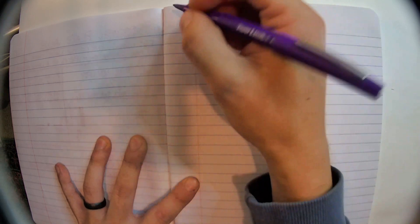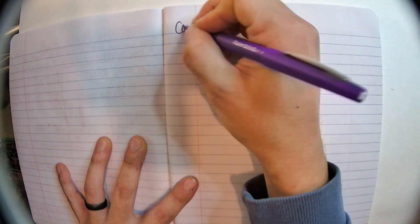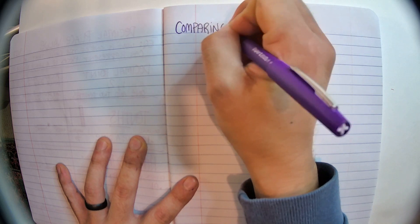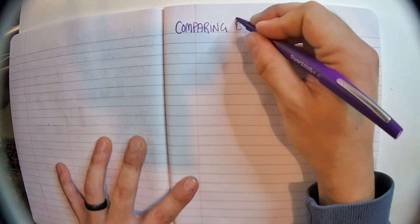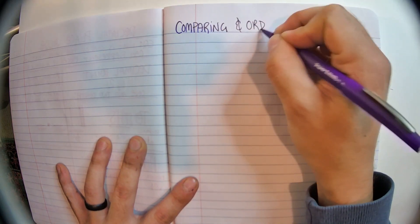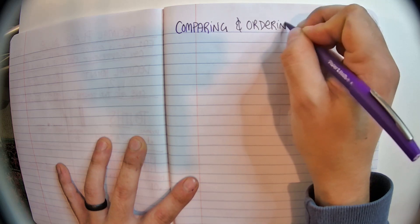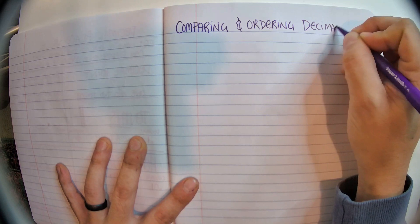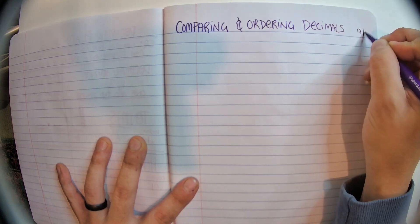So here for our newest page, we're going to put the title: comparing and ordering decimals. The date, 9/29.